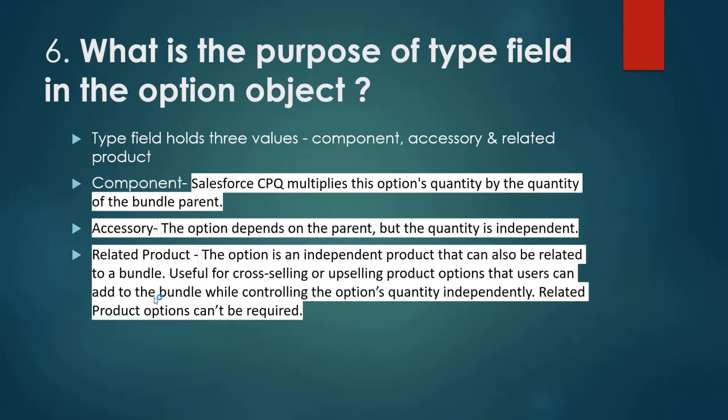When the type is 'Accessories', the option depends on the bundle but the quantity is independent, so it will remain the same even if the customer is buying multiple products. When the type is 'Related Product', the option is an independent product that can also be related to a bundle — useful for cross-selling or upselling. The user can add it to the bundle while controlling the option quantity independently. Related product options cannot be required.